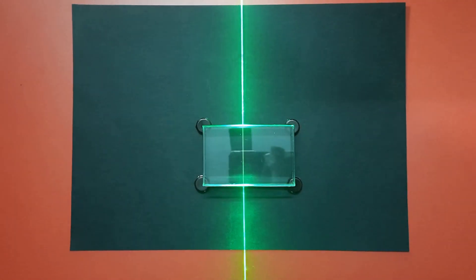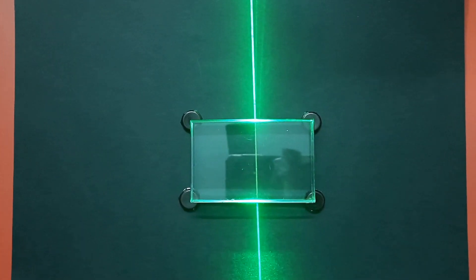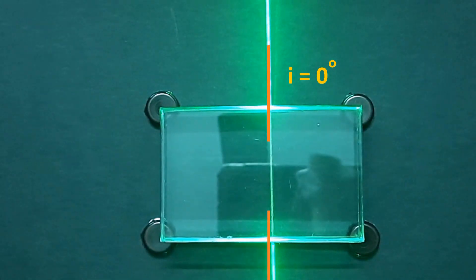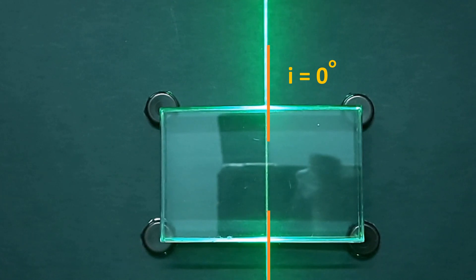If light is incident normally on the glass slab, then angle of incidence is zero degrees. In such a case the ray will go straight even though there is a change in speed of light, as it is the shortest path through which light can travel in the glass medium.